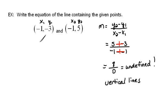All vertical lines come in the form of x equals some number. And in this case, x would be negative 1.